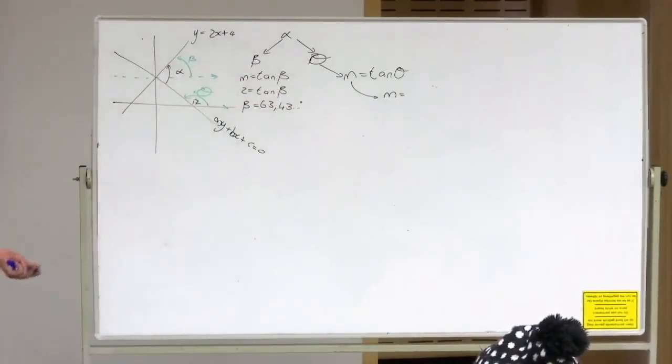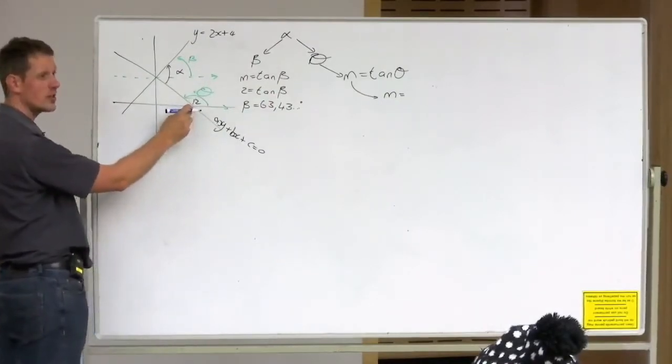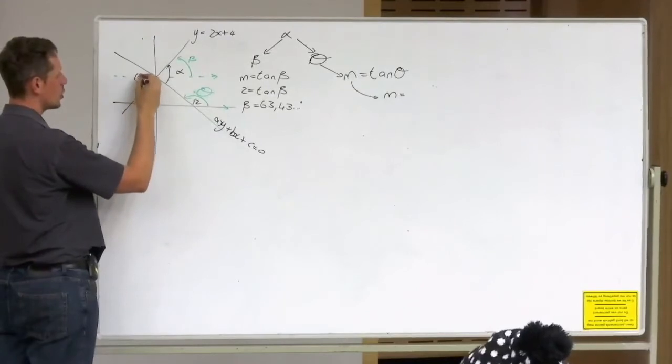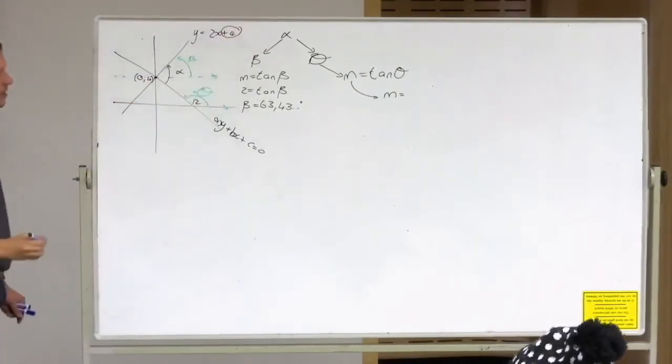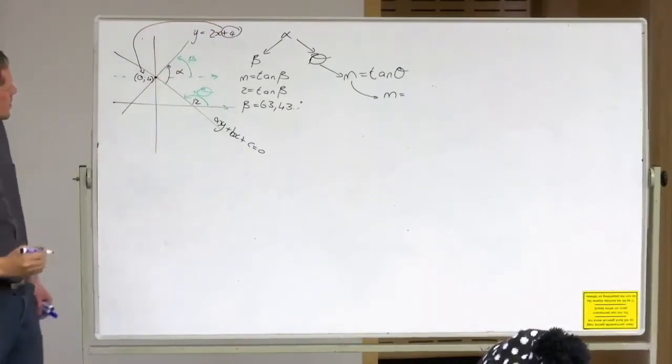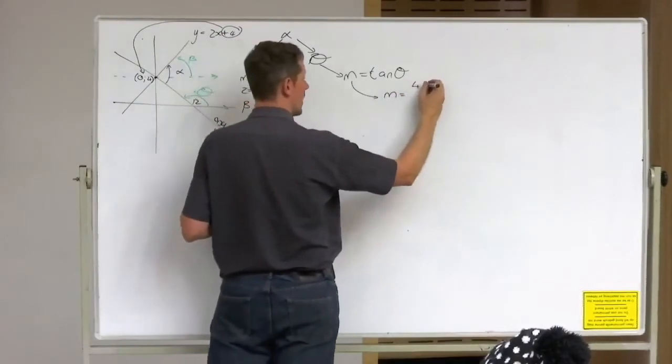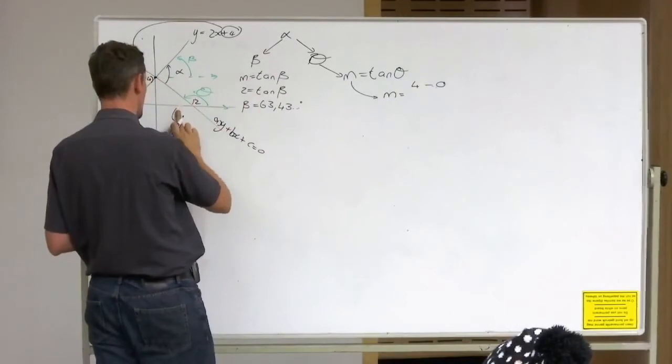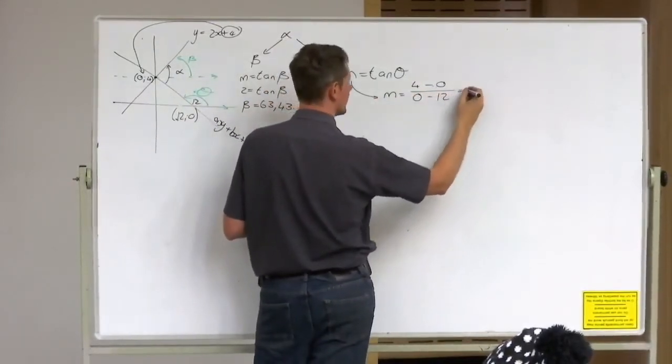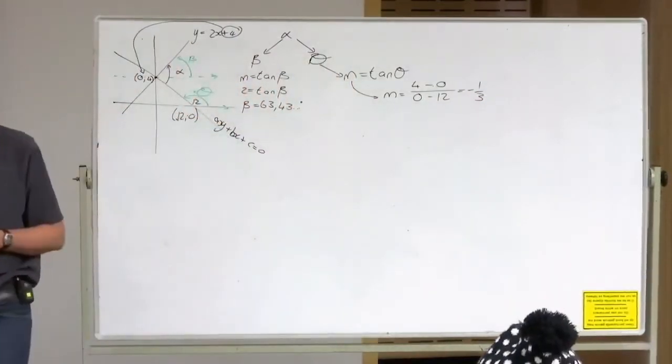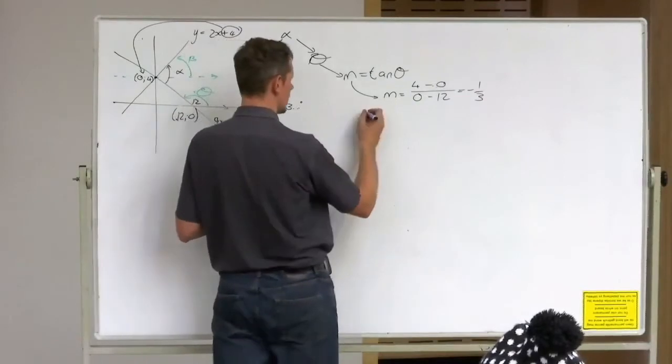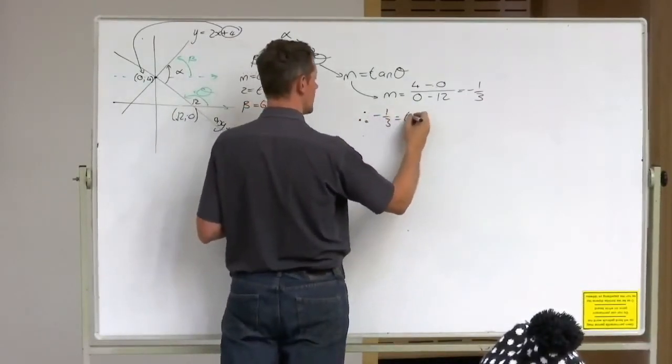So M I can do by using gradients. But the problem is I only have one coordinate on it, but I can get a second coordinate. And that coordinate is (0, 4), because it is the y-intercept of that. So if I go towards this, I'm going to say 4 minus 0, because this one is (12, 0), 4 minus 0 over 0 minus 12. And again, please use your calculator. Don't go and run out step by step by step by step. Just put it in your calculator and get an answer. So this means, therefore, negative one-third is equal to tan of theta.